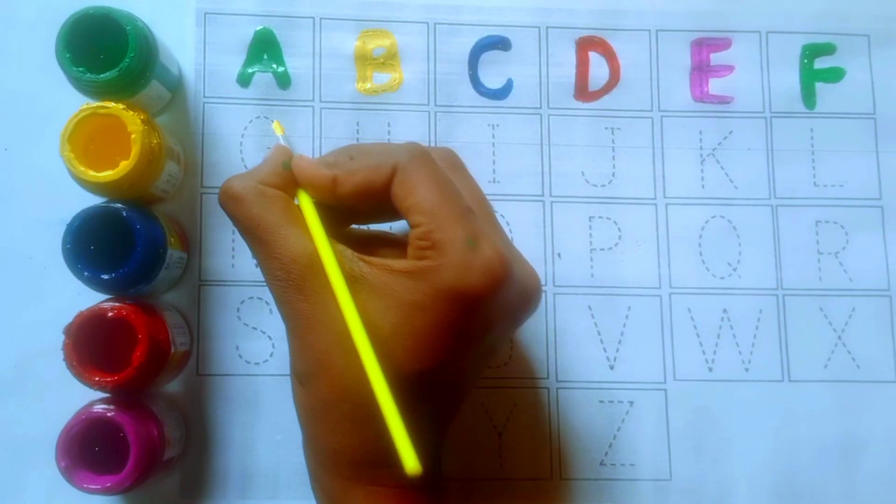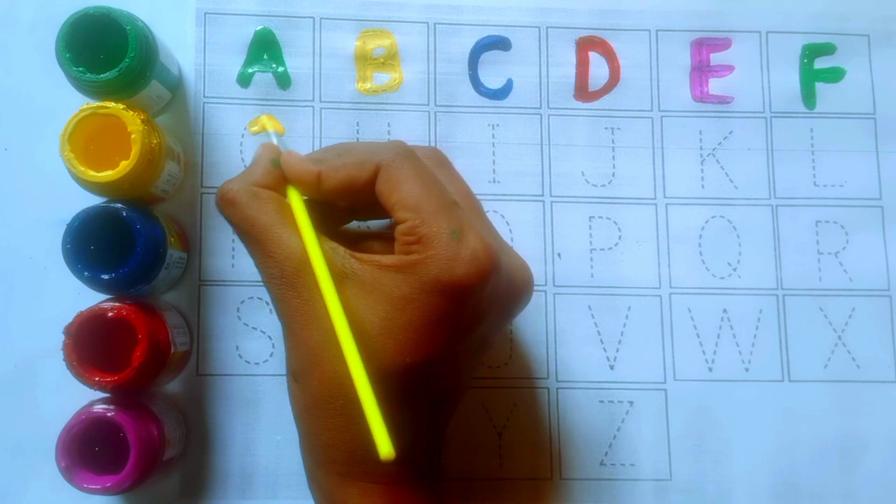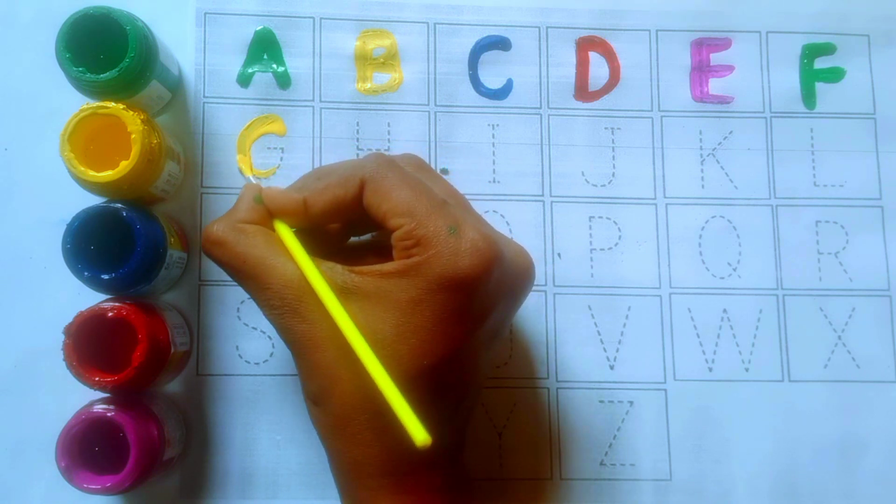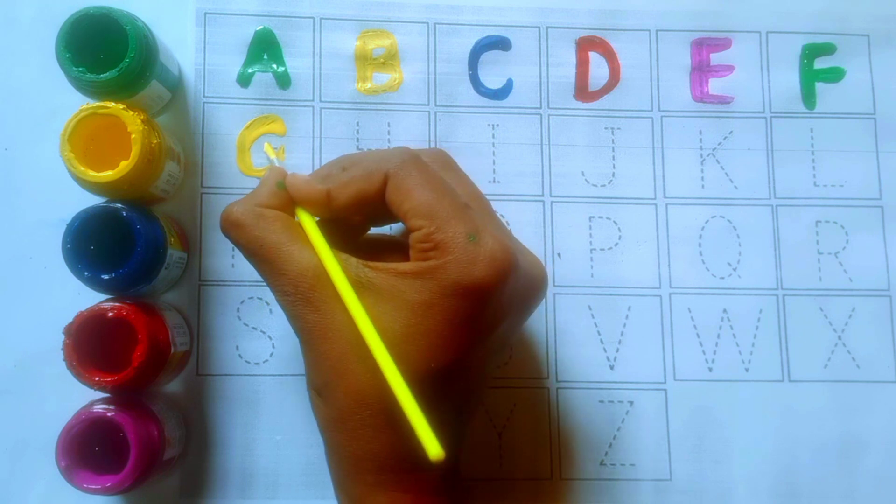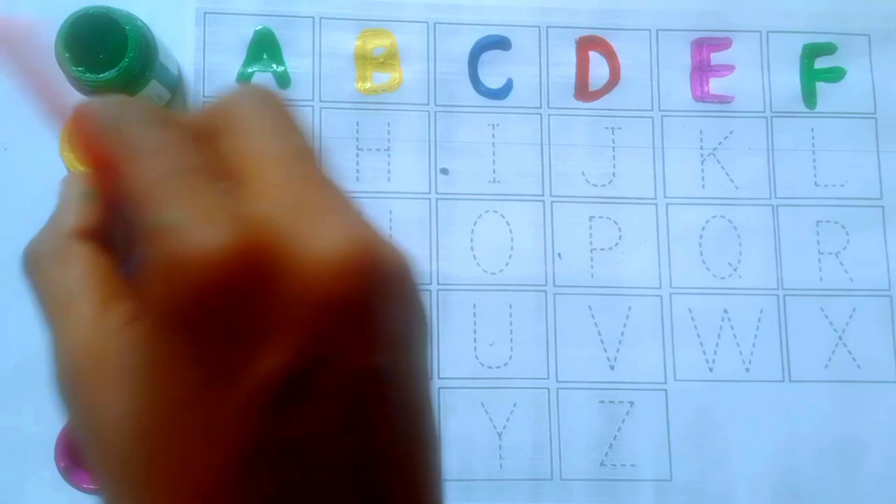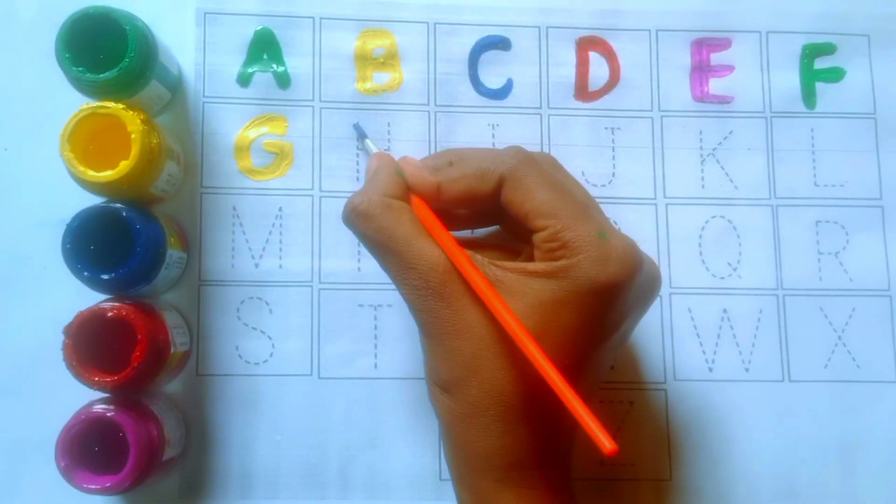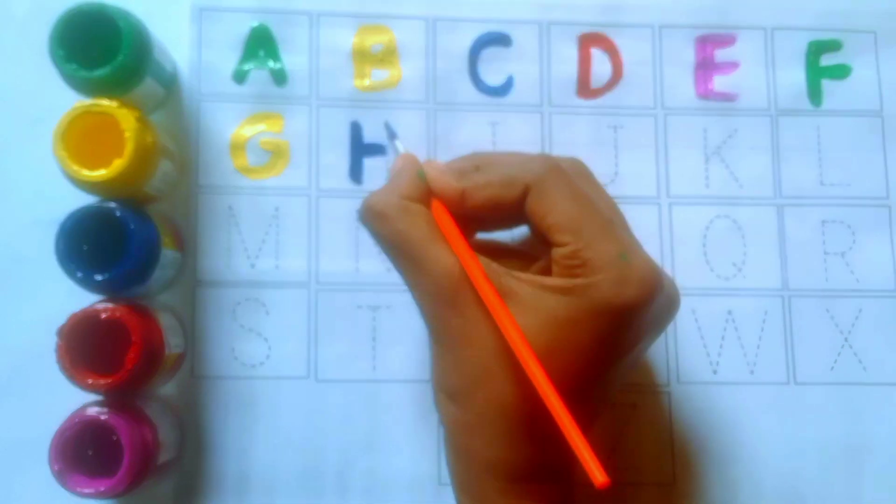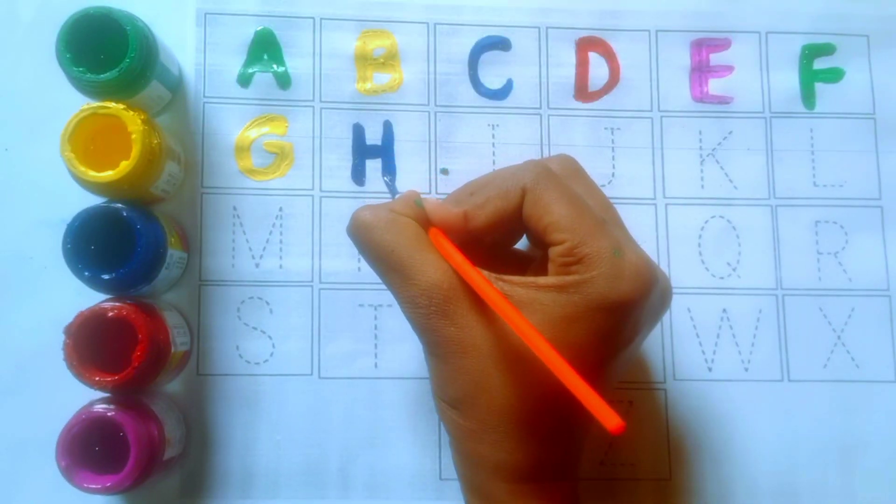Yellow color. G, G for girl. Blue color. H, H for hen.